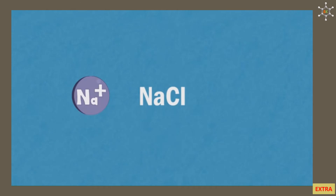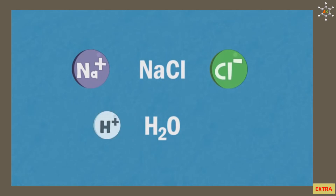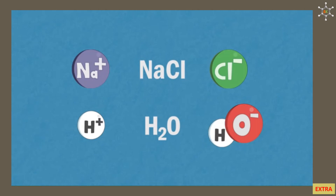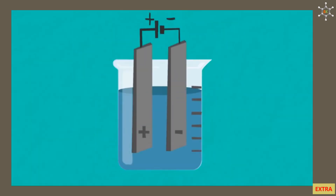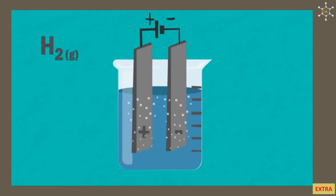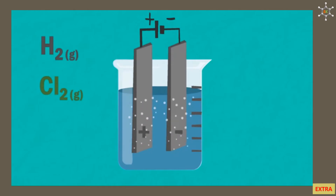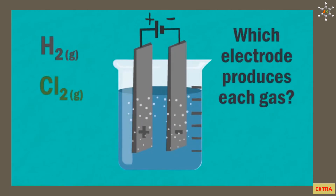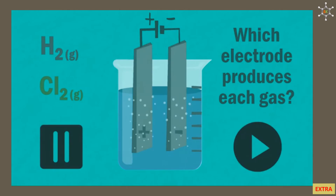From sodium chloride we have positive sodium ions (Na+) and negative chloride ions (Cl−), and from water we have positive hydrogen ions (H+) and negative hydroxide ions (OH−). When current flows, tiny bubbles of gas form at each electrode — both hydrogen and chlorine gas are produced.